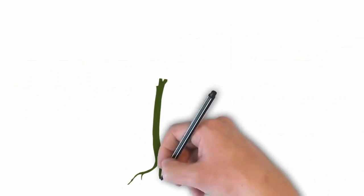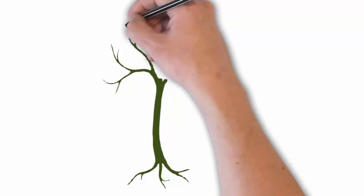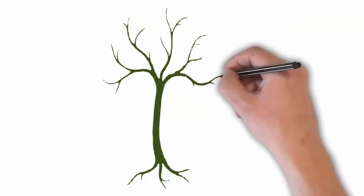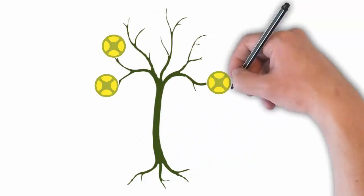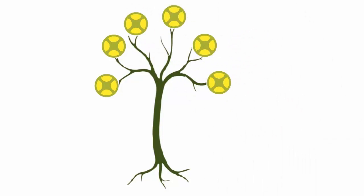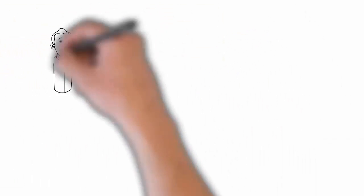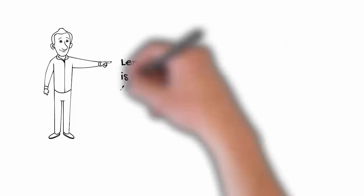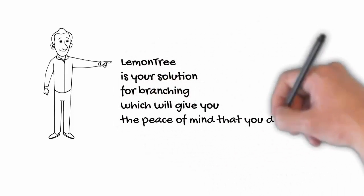Lemon tree, the perfect symbol of that relaxed tropical lifestyle we all dream of. The tree and its branches represent the various model versions calling for a merge. It's so simple. Lemon tree is your solution for branching which will give you the peace of mind that you deserve.